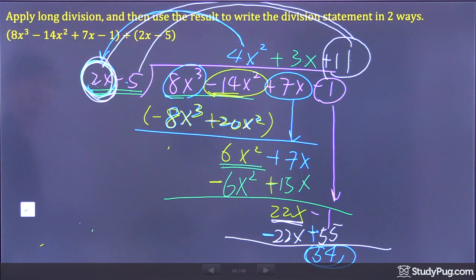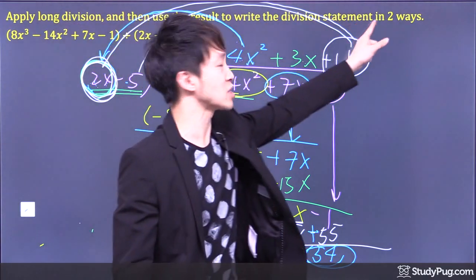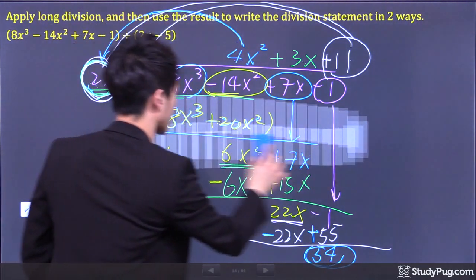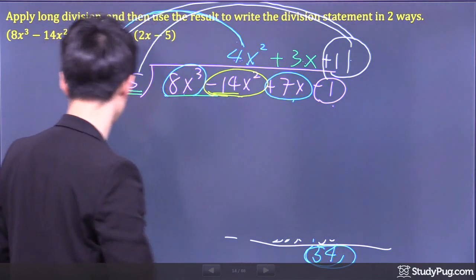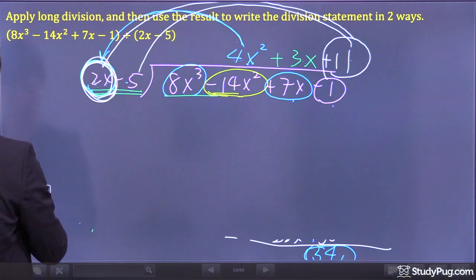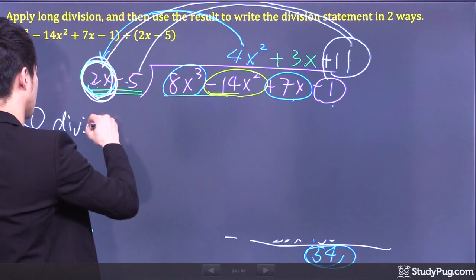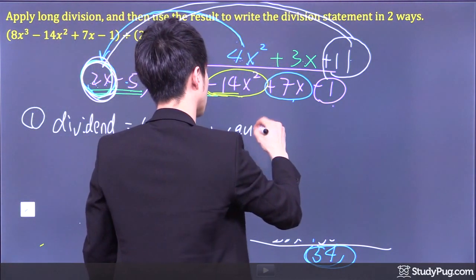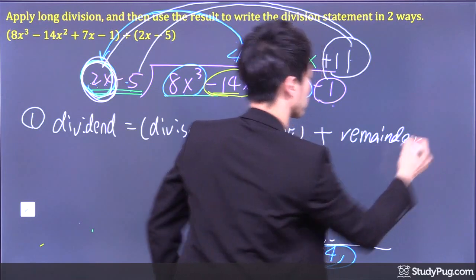So we've finished doing the long division. Now we need to write the result in two ways. The first way of writing a division statement is: dividend equals divisor times the quotient plus the remainder.